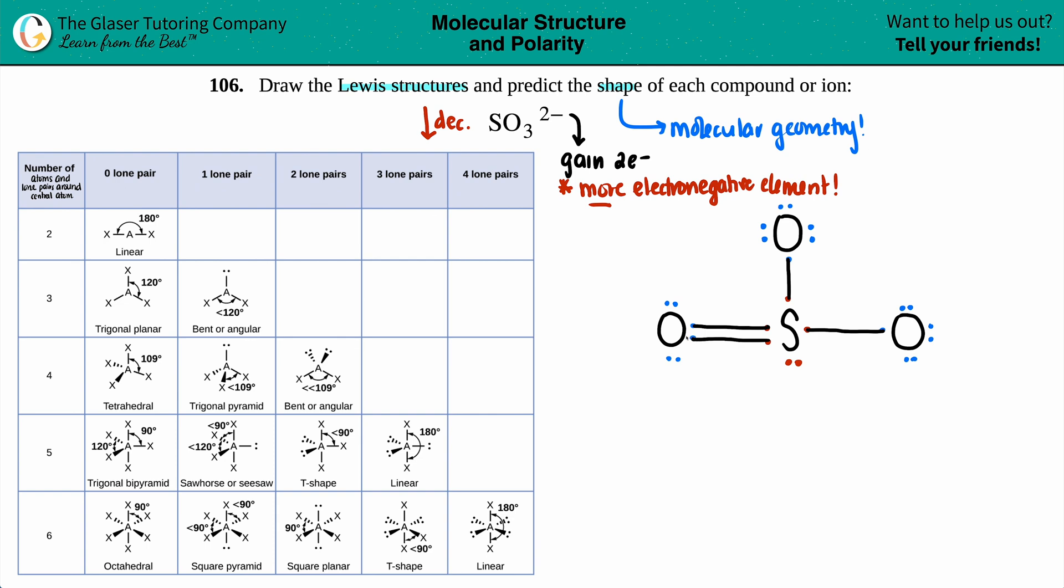So the oxygen gains that one bond, and now it's got the octet. Sulfur has two, four, six, eight, ten electrons—a little bit more than the octet, but that's totally fine because sulfur is in period three. Remember, once you start getting down on the periodic table, sulfur, chlorine, iodine—if those elements are in the center, it can have more than eight electrons, max of 12. So 10 is all good.